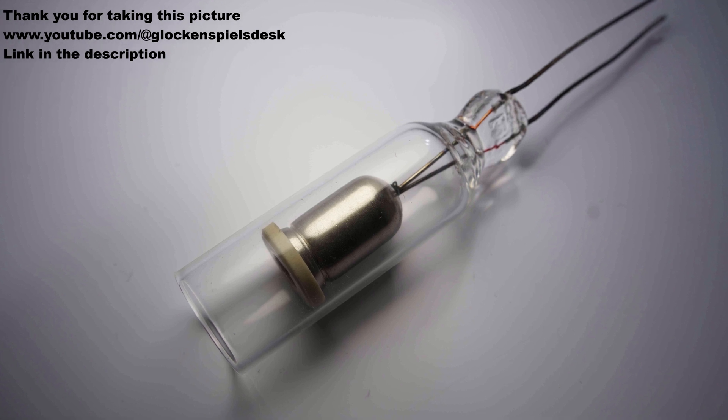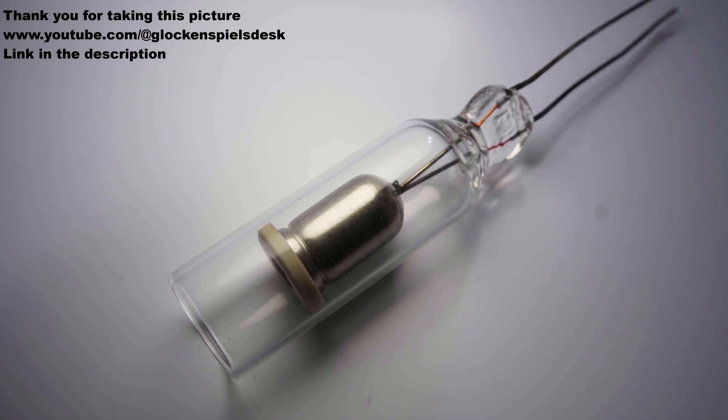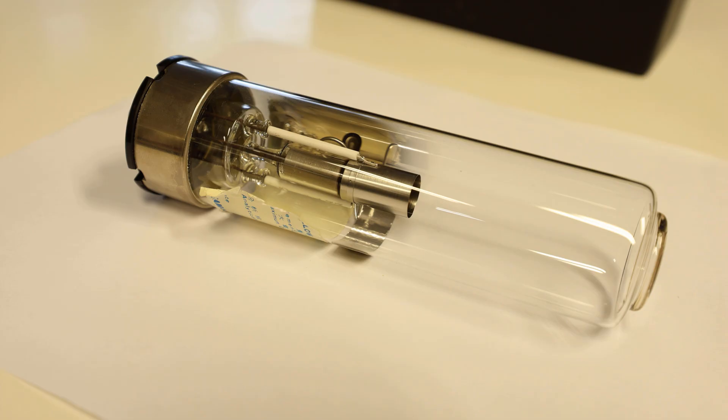In commercial neon tubes the electrodes are actually shaped into a hollow cylinder. This seems pretty similar to the hollow cathode lamp and that keeps the metal that's flying off inside of the cylinder.